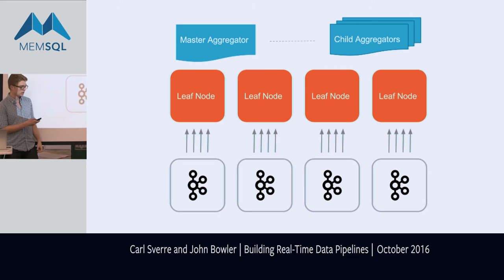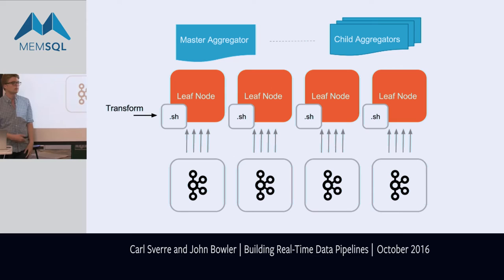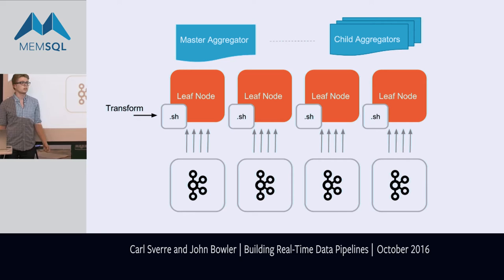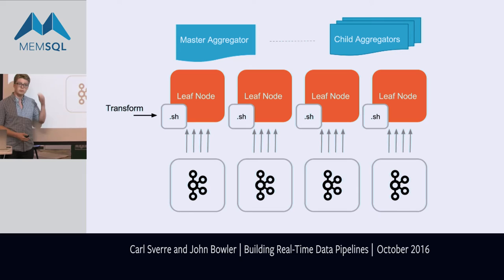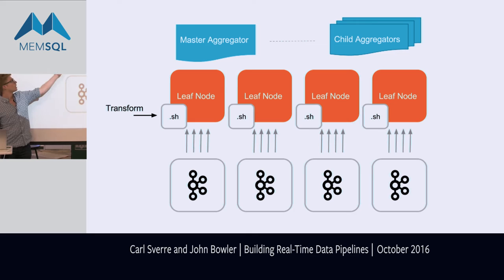That's sufficient if you just want to load data straight from Kafka into a table. If you additionally want to run some sort of transform — map-reduce or RDD-like operation — you can have a transform, which is just a binary or a program. You can write it in whatever language you want. All it does is read records from standard in and write records to standard out, so you can write it as a Python script, a bash script, a C program for amazing performance. You can do any machine learning or data science work, even hit an external server. Every record from Kafka passes through the transform and is loaded into the leaf nodes, all in parallel automatically.